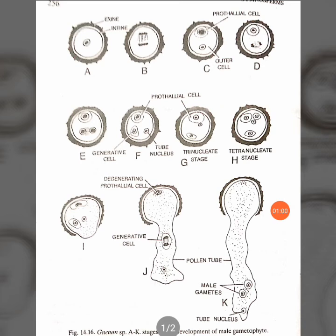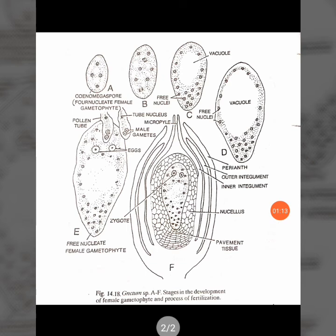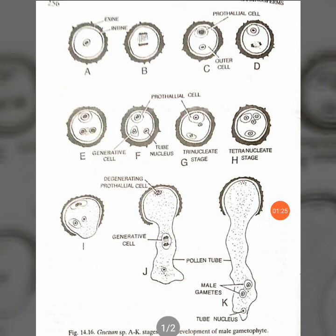The pollen tube migrates towards the female gametophyte. Looking at figure E, we can see how pollen tubes enter and migrate inside the nucellus toward the female gametophyte. The tube nucleus and the generative cell move into the pollen tube, while the prothallial cell degenerates — as clearly shown in figure J.